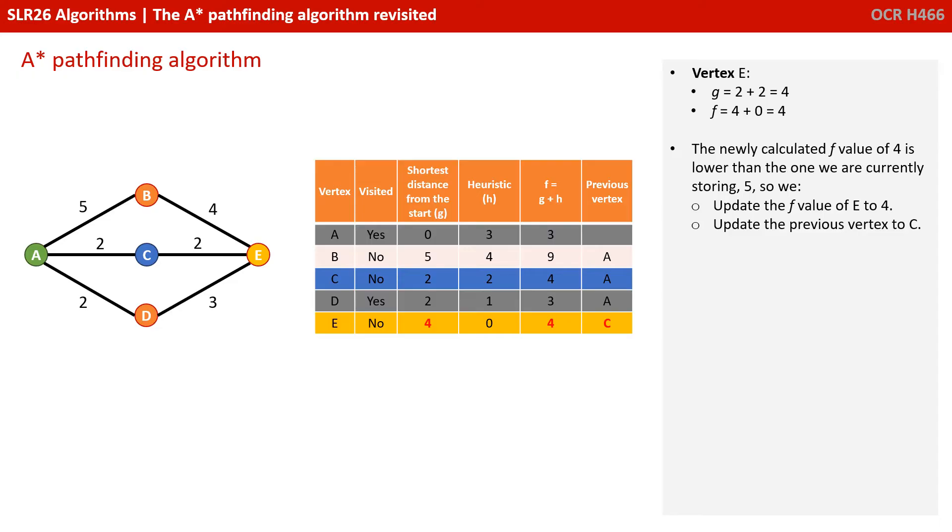So we need to calculate once more the F value for E. That's the G value, so that's the value for G at C of 2, plus the edge value of 2 gives us a new G value of 4, plus the heuristic of 0, giving us an F value for E of 4.